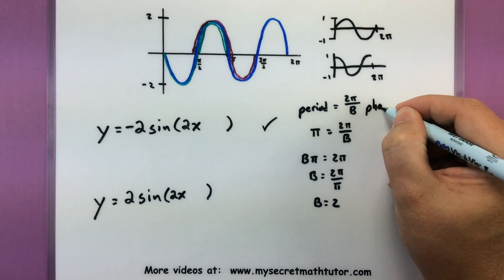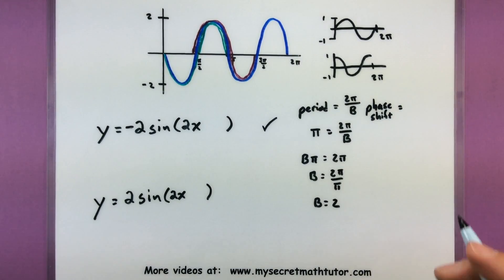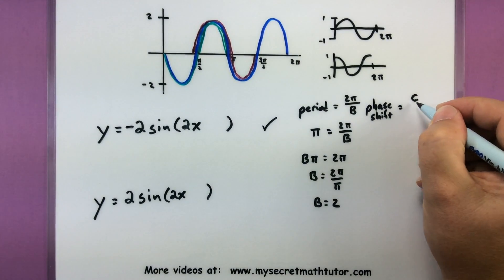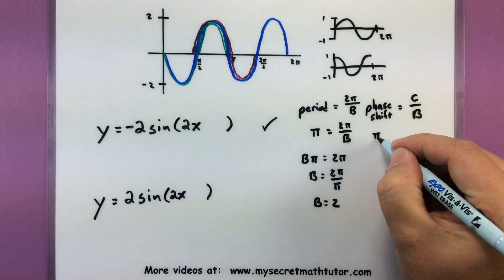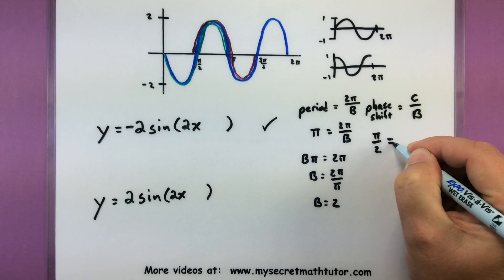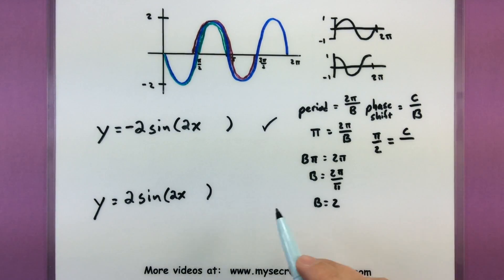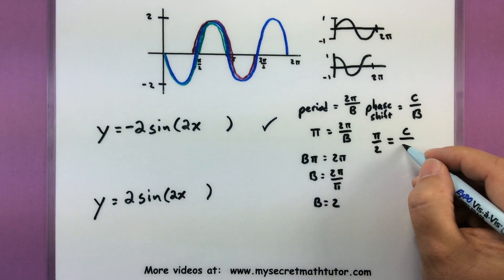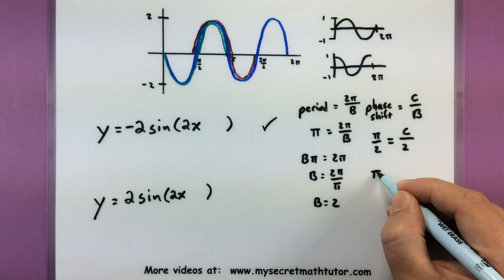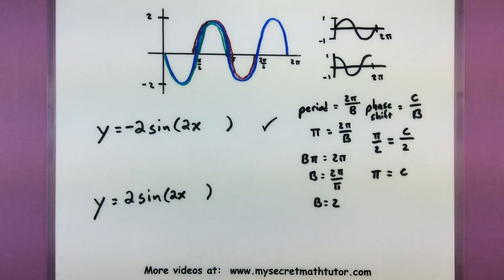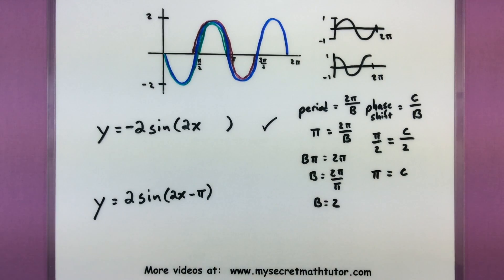Let's write phase shift. We'd normally figure out the phase shift by taking the value of C and dividing it by B. So let's see. Our phase shift is pi divided by two. We don't know the value of C yet, but I do know the value of B we had earlier was two. So now I can solve this nice equation and get that pi is equal to C. So we have minus pi on the inside.